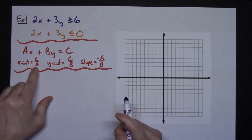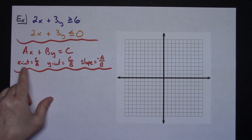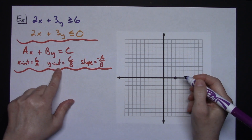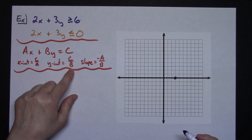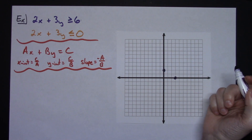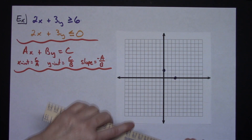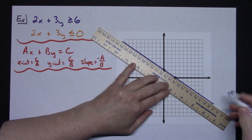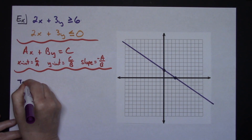Let's graph the purple line. The x-intercept is c over a: 6 divided by 2 is 3, so I put a dot on the x-axis at 3. The y-intercept is c over b: 6 divided by 3 is 2, so I go up to 2. Those two points let me quickly graph that line. Looking at the inequality symbol, it tells me this is a solid line.